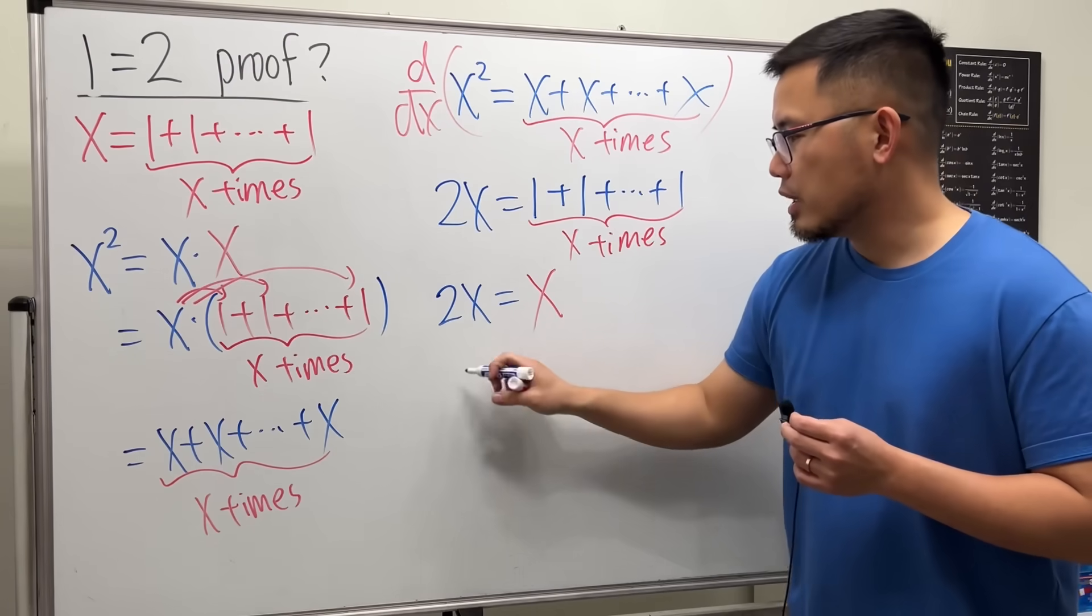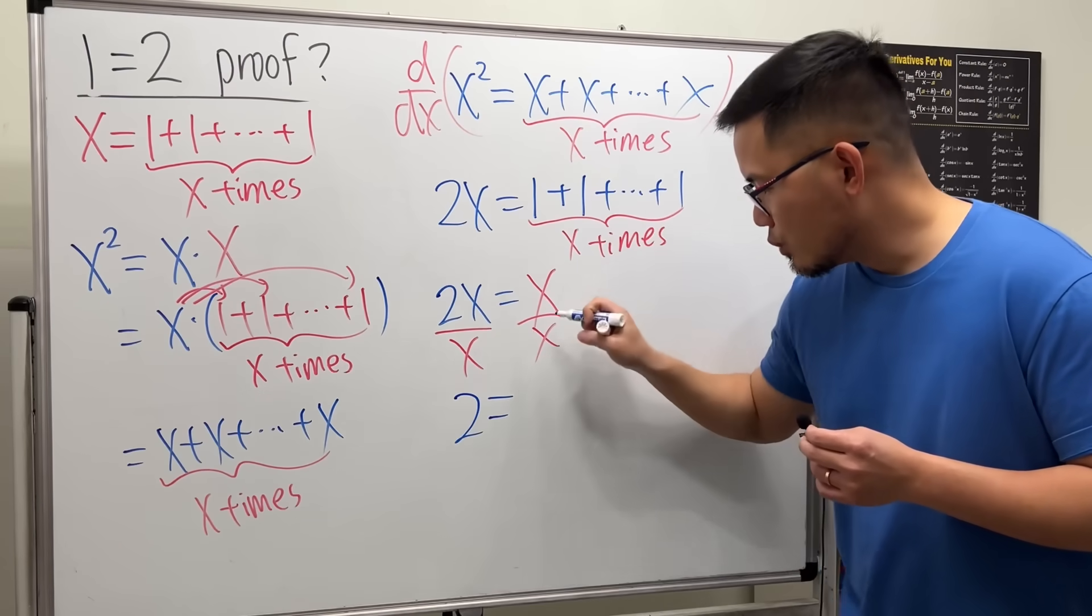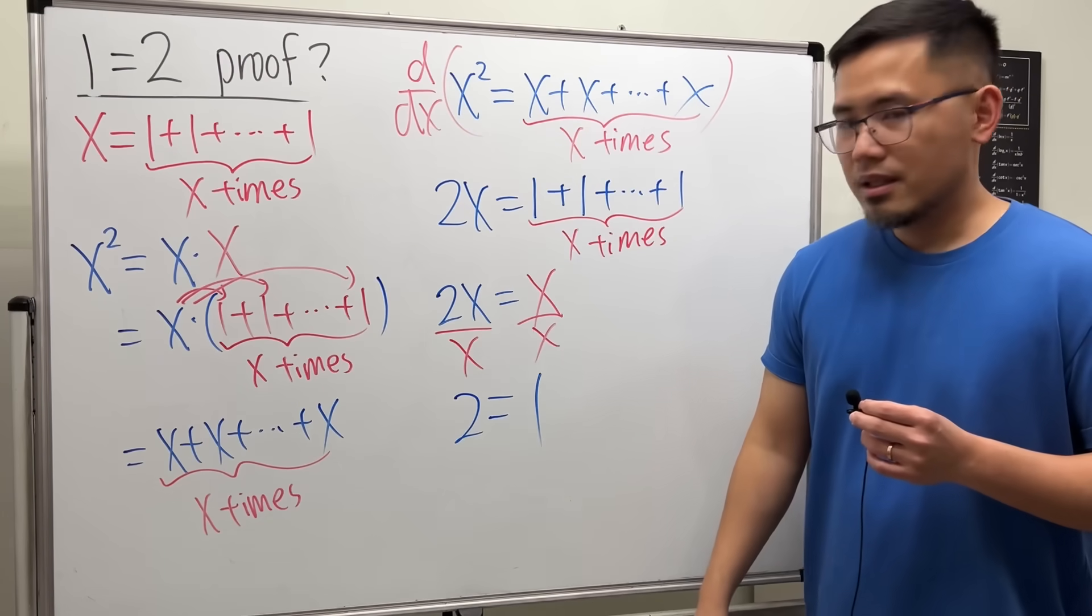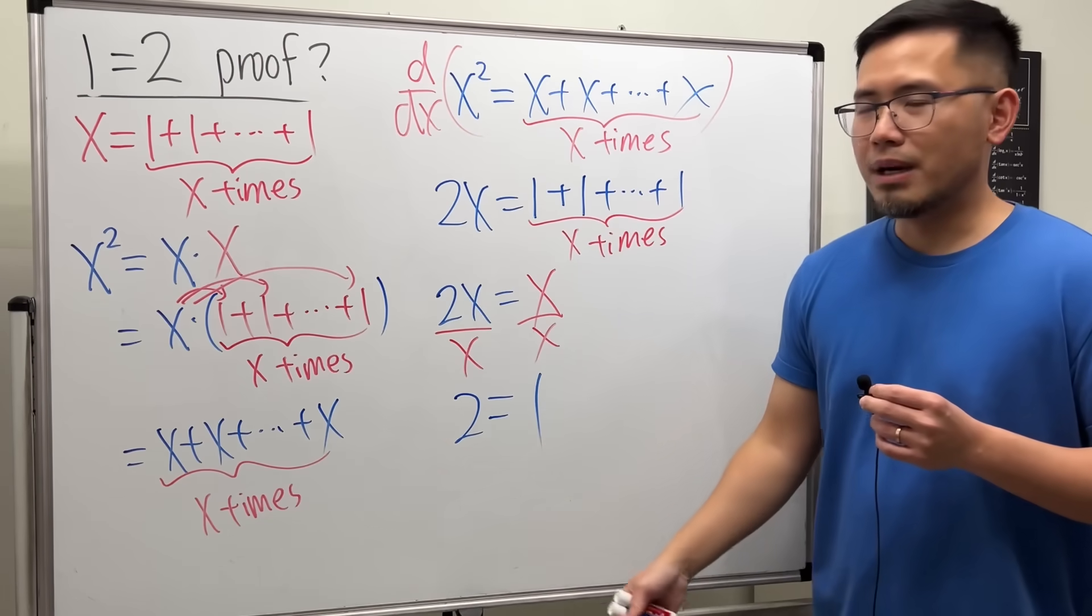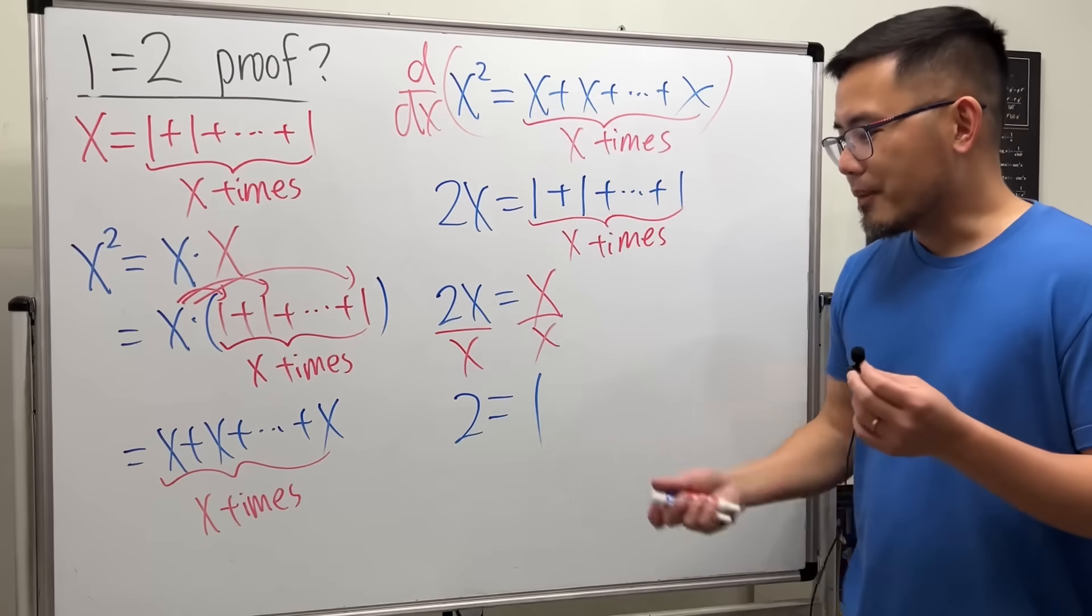Now let's divide both sides by X. We just end up with 2 equals 1. Yeah, I know the word is different, but this is wrong already, so it doesn't matter what's the word, right? So now the main question is, like, where did this go wrong?